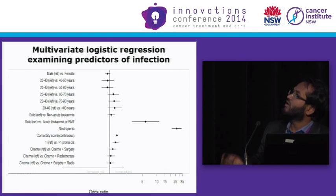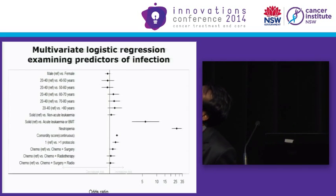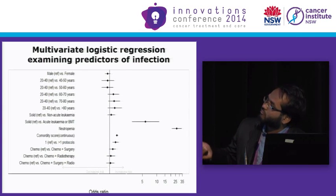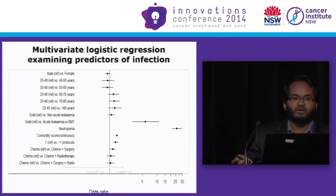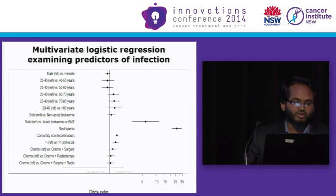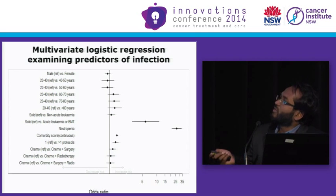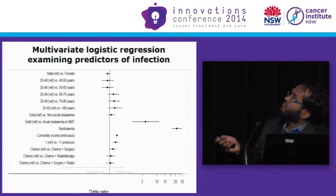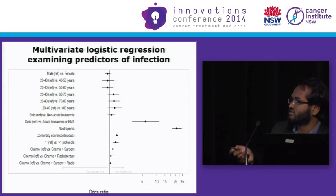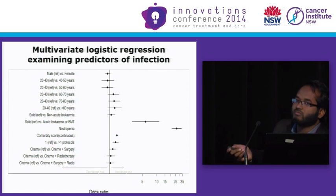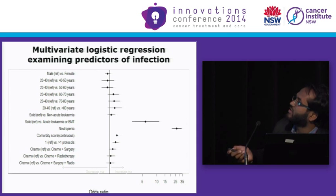We looked at the correlates of infections — why patients are getting infected. This shows the multivariate logistic regression accounted for age, sex, area, SEIFA, tumor type, neutropenia, comorbidity score, and chemotherapy treatment type. We can see that acute leukemia and neutropenia appear to be significant predictors of infection, along with higher comorbidity scores and treatment with more than one protocol. Chemotherapy plus surgery appears to be a higher predictor for infections compared to chemotherapy-only treatment, however it is not statistically significant.